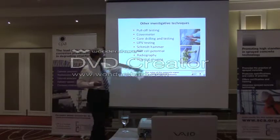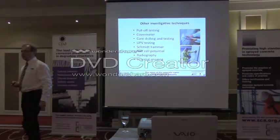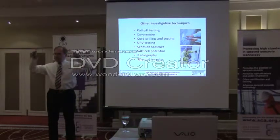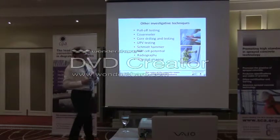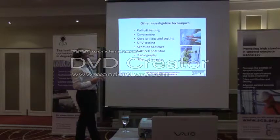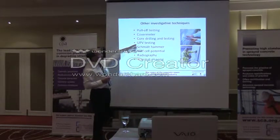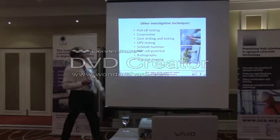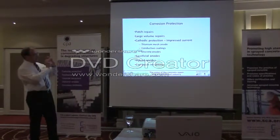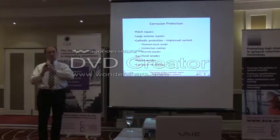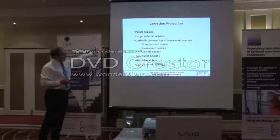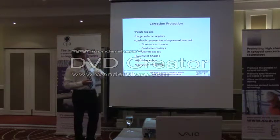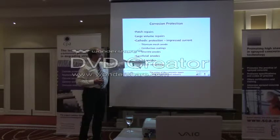Other investigative techniques include cover meters and UPV testing — pulse velocity testing. The diagnosis can be quite difficult. Half-cell potential, radiography, and thermal imaging are all techniques that can be used during an investigation. So we're looking at the investigation stage — before we can do any repair, we need to find out what's wrong. Then, as a summary of what's already been covered, we have the corrosion protection methods: patch repairs, volume repairs, cathodic protection using impressed current, cathodic protection using sacrificial anodes, hybrid anodes, and corrosion inhibitors.